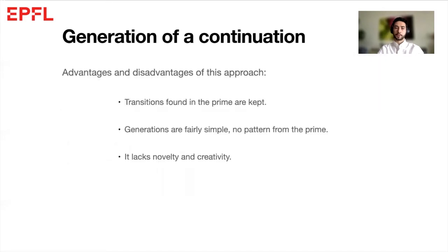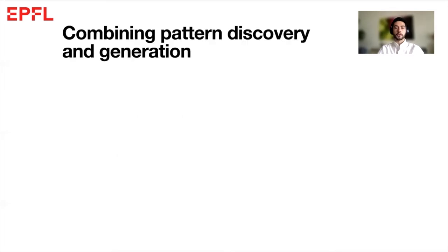Generations using this process keep the transitions found in the prime, but not the patterns. They are fairly simple and certainly lack novelty. So what if we combine the pattern discovery algorithms with the generation using the first-order Markov model?